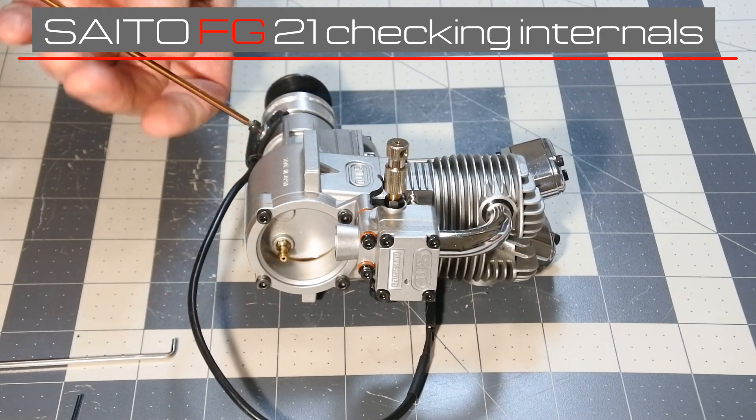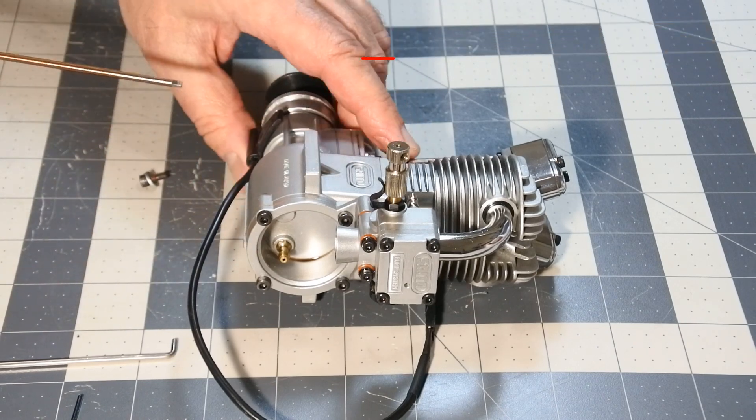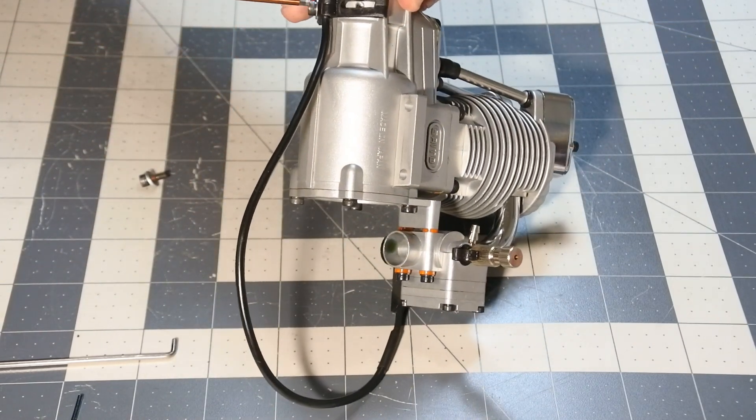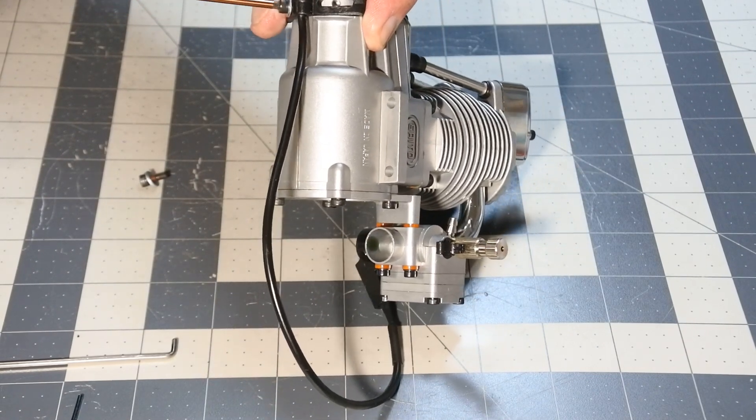Today I decided to disassemble our Seata FG21 engine, torture it by Nitro experiments, to check the condition of its internal structure and parts.